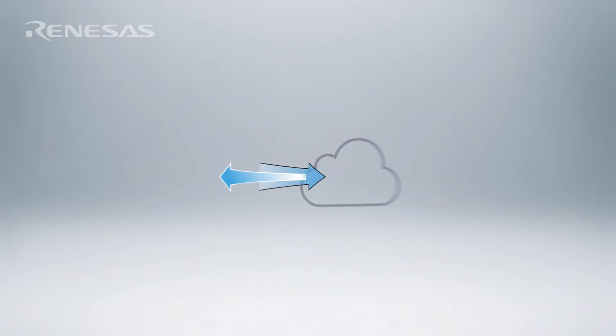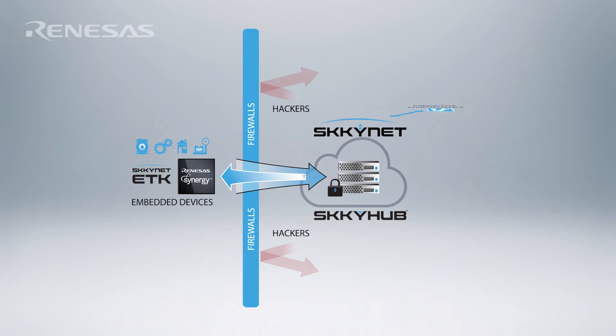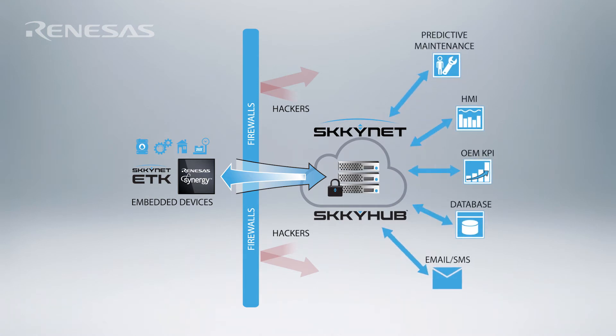In the cloud, the ETK can communicate directly to Skyhub, so you can connect to any web service using our APIs, network your data anywhere in the world, consolidate your data streams, and monitor, control, and visualize your data using our included HMI — securely, without any IT policy changes.